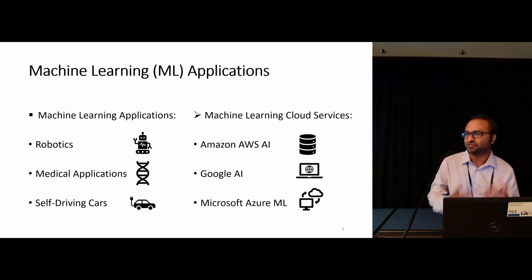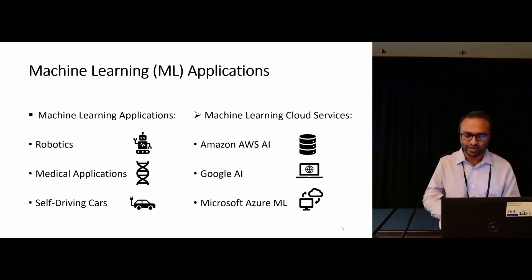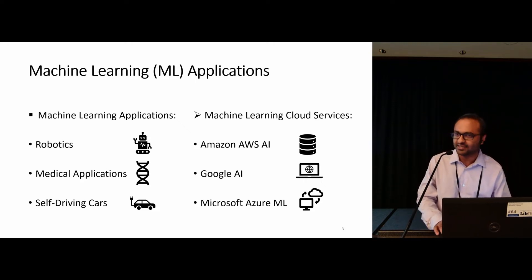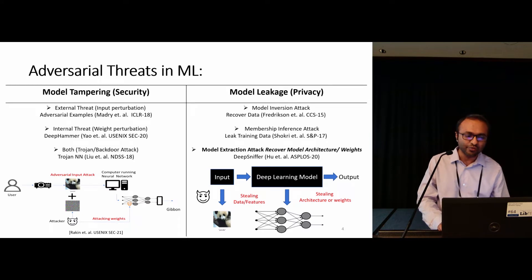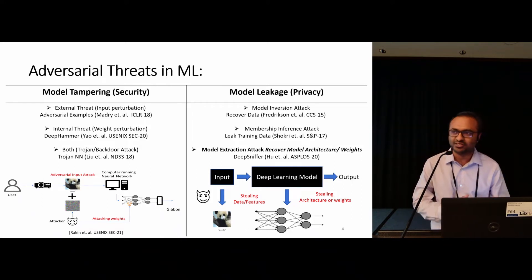In such cloud service, the vendor trains large models which have potential IP values and lends them to customers who can use those models with certain remote privileges. Such remote access gives rise to different kinds of adversarial threat models. We broadly classify those threat models into two major categories. The first one is the model tampering attack, where the attacker actually tampers the inputs, weights, or sometimes both, popularly known as trojan or backdoor attack.